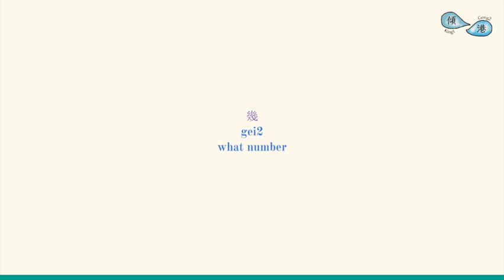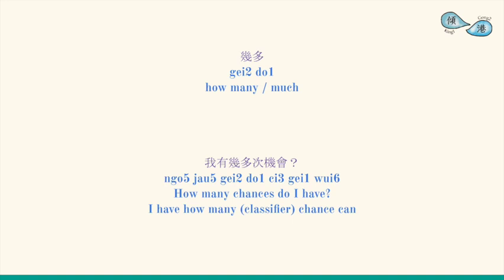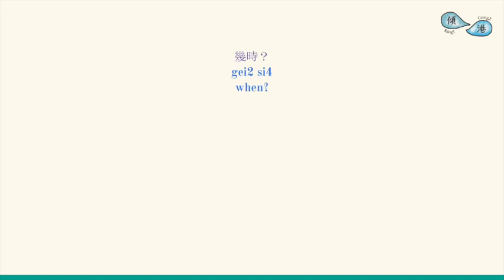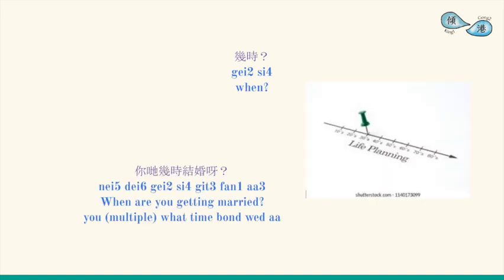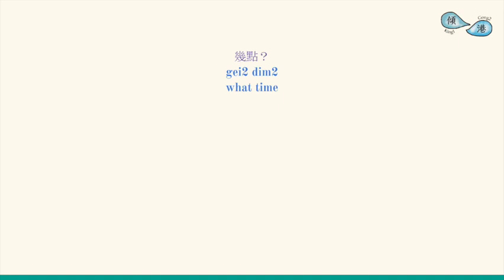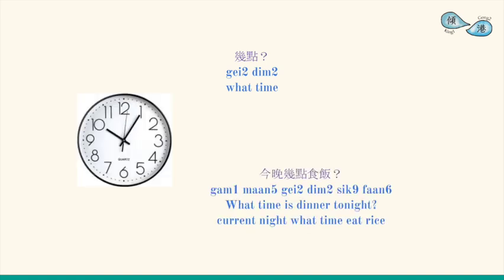For numbers, we use the interrogative 幾. 幾多 means 'how many' — for example: 我有幾多次機會? (How many chances do I have?) 幾時 means 'when' — for example: 你們幾時結婚呀? (When will you get married?) 幾點 also means 'when', but it expects a more specific answer — for example: 今晚幾點食飯? (What time are we eating tonight?)